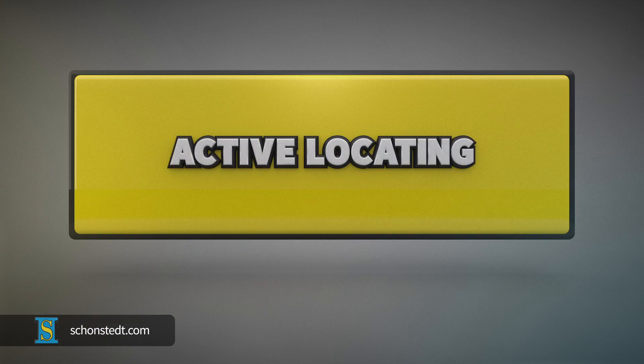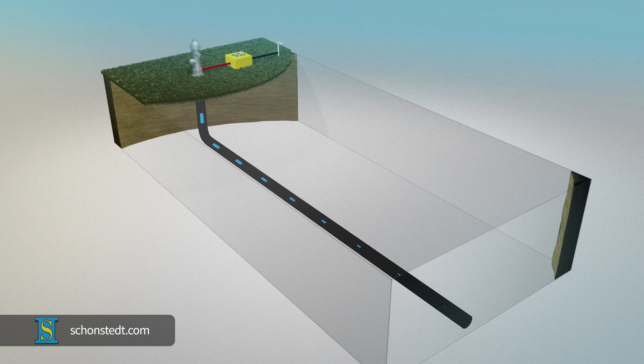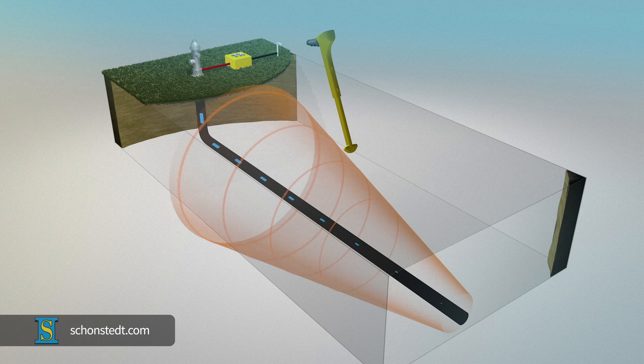The first method is known as active locating, because a transmitter is used to impose the circulation of an electric current on the pipe or cable, and a receiver is used to detect the field created by the current.